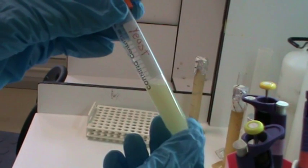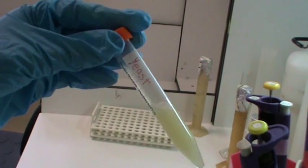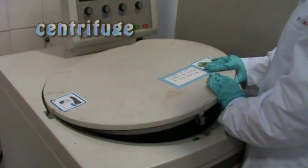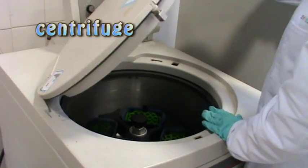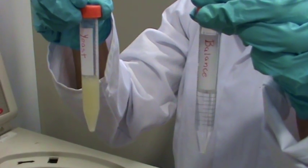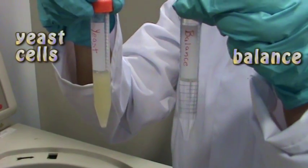Here I have yeast cells which I have grown up overnight in a flask in rich media. In our lab we use a centrifuge to gather the yeast cells. It does this by spinning them at very high speeds. Right now I am using the centrifuge to separate the yeast cells from the liquid media.